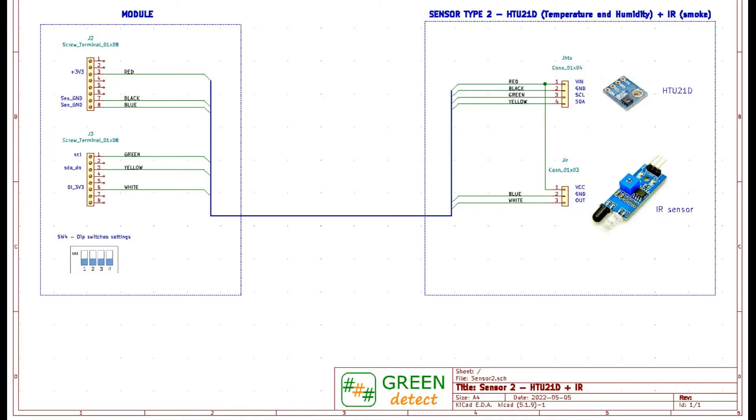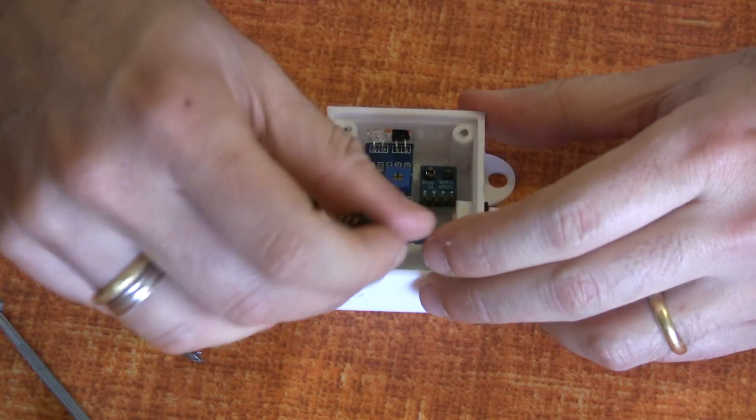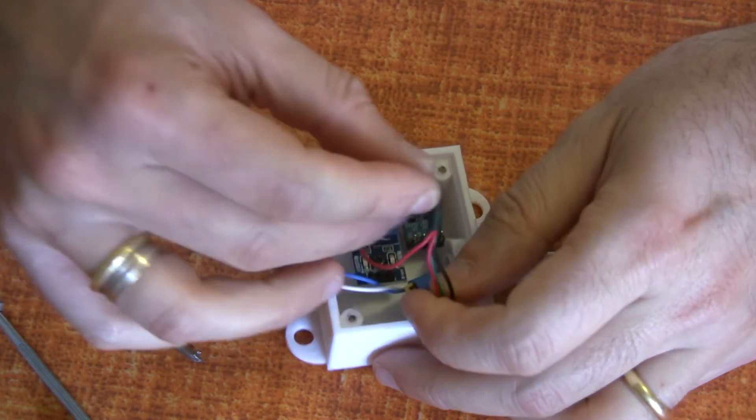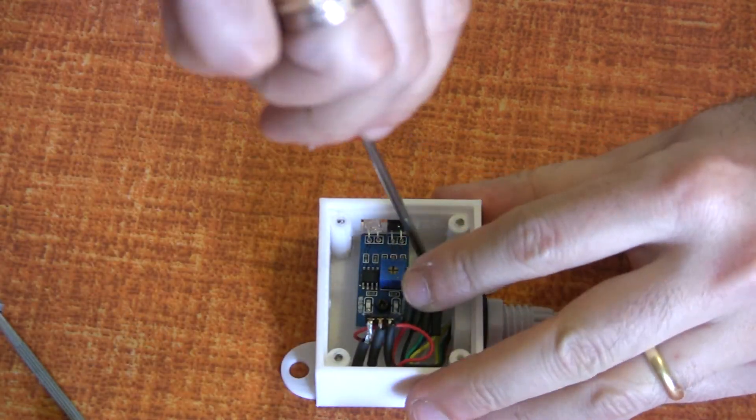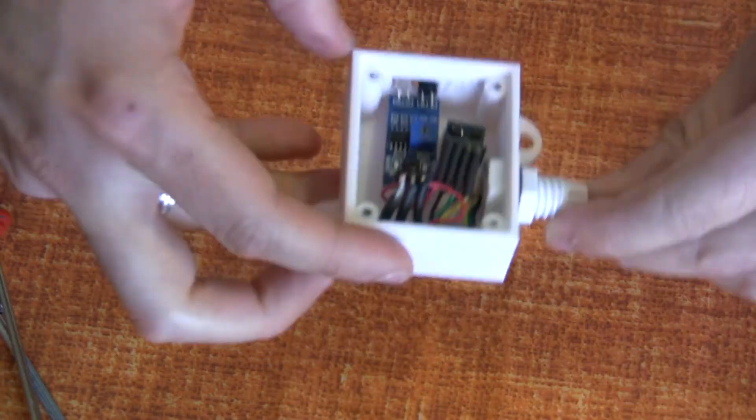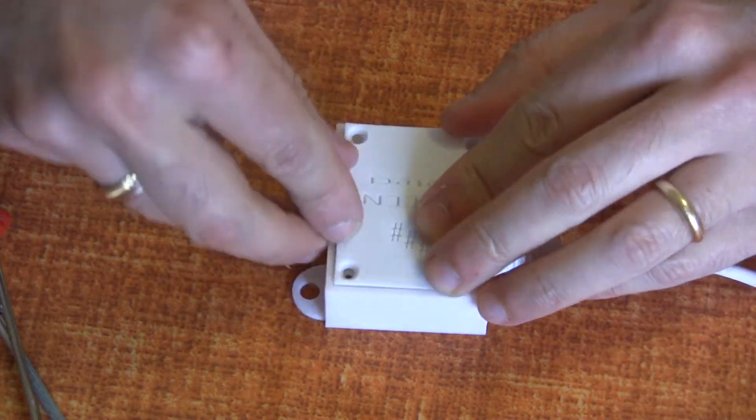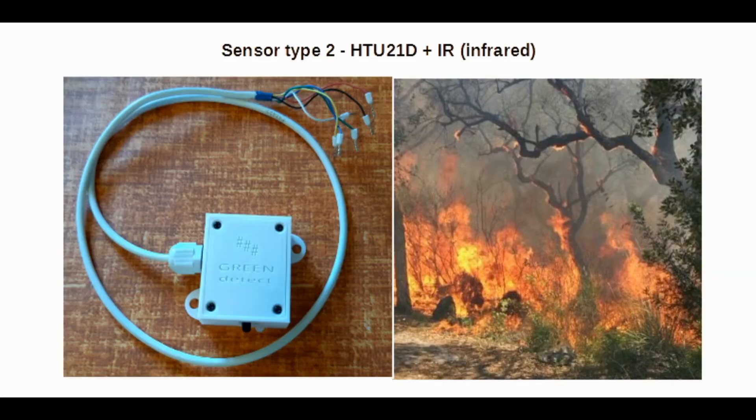Sensor type 2: DHT-21D plus infrared. These sensors detect temperature, relative humidity, and proximity objects. The measurement of temperature, humidity, and smoke detection by means of an infrared sensor makes this sensor a possible cheap solution for the detection of forest fires.